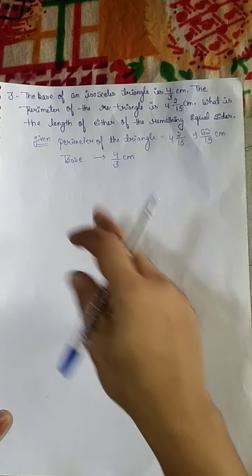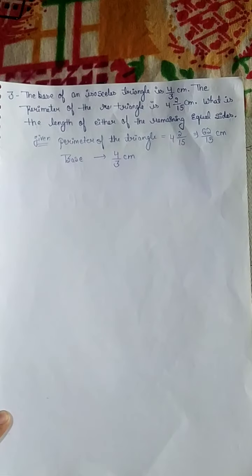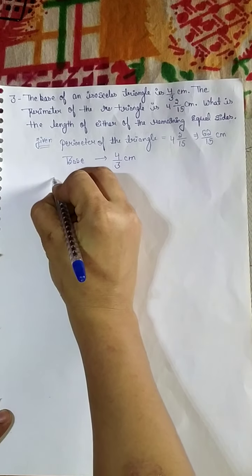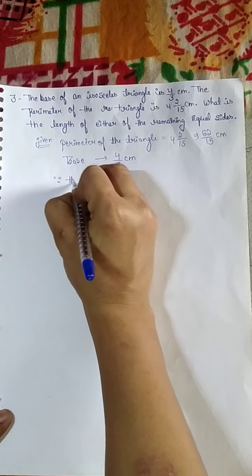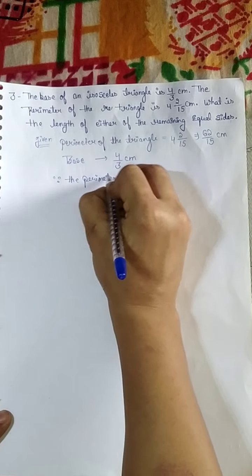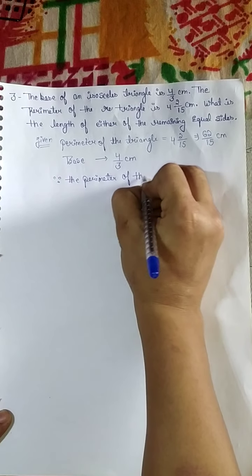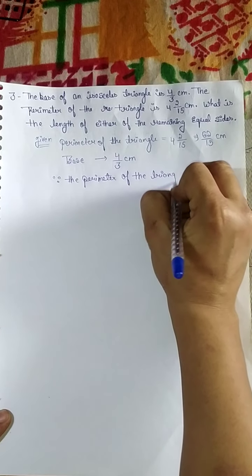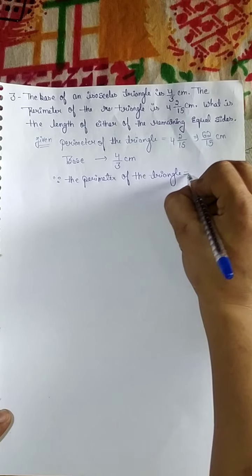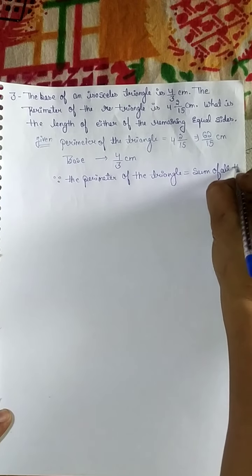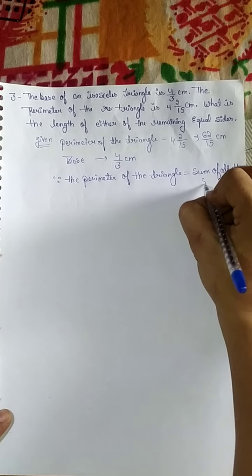Now we have to find either of the remaining equal sides. Since the perimeter of the triangle is equal to the sum of all three sides, we will use this formula.